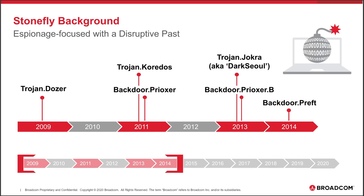A little background on Stonefly: they first became publicly known in 2009, coming on the scene with a malware called Trojan.Dozer. This was disruptive malware that carried out a DDoS attack. Symantec analyzed this in 2009 and found that it also carried out wiping — specifically wiping the master boot record of infected machines. In 2011, Trojan.Corritos told a similar story: DDoS malware that also carried out wiping, but on a subset of infected machines, Symantec discovered a relatively stealthy backdoor called Preoxer. This was one of the first indications that Stonefly, in addition to disruptive activities, was also possibly carrying out espionage.